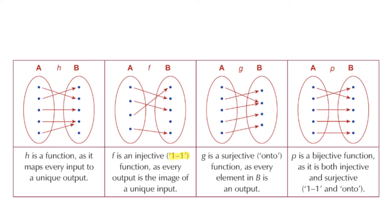We have four mapping diagrams. The first is function H. H is a function as it maps every input to a unique output — every blue dot in A only has one arrow coming out of it. Think of a function like a remote control: if you press a number you want to get one single channel, not a choice of three different channels.